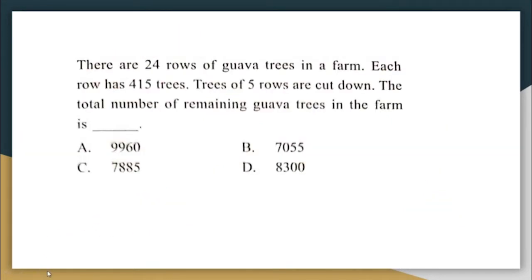Next question: there are 24 rows of guava trees in a farm, and each row has 415 trees. Trees of 5 rows are cut down. The total number of remaining guava trees is to be found. There are 24 rows and each row has 415 trees.